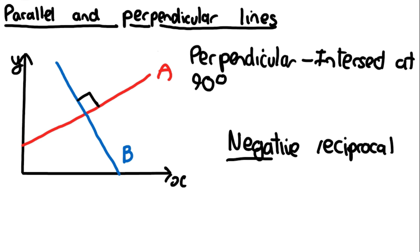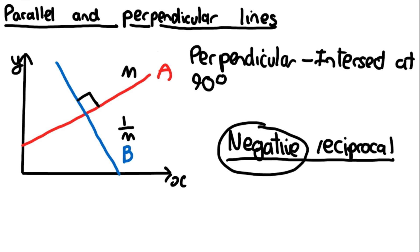The key thing for this chapter is that for two perpendicular lines, their gradients are going to be negative reciprocals of each other. A reciprocal is when you flip the number — another way of saying it is 1 divided by the number. So if the gradient of A is M, the gradient of B is going to be the negative reciprocal, which is minus 1 over M.